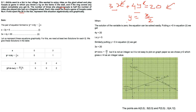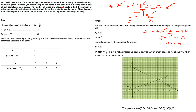Let us substitute Y = X/2 into the first equation. We get 3X + 4 × (X/2) = 20, which simplifies to 3X + 2X = 5X = 20. So X = 20/5 = 4. Putting X = 4 back into Y = X/2 gives Y = 2. So the solution is X = 4 and Y = 2.